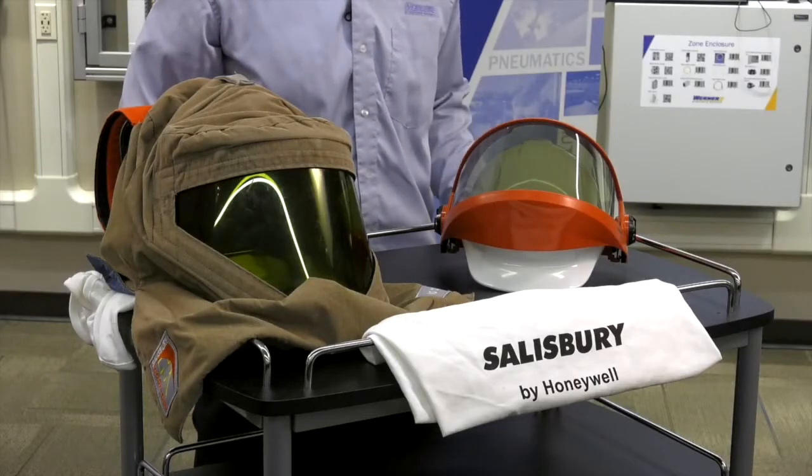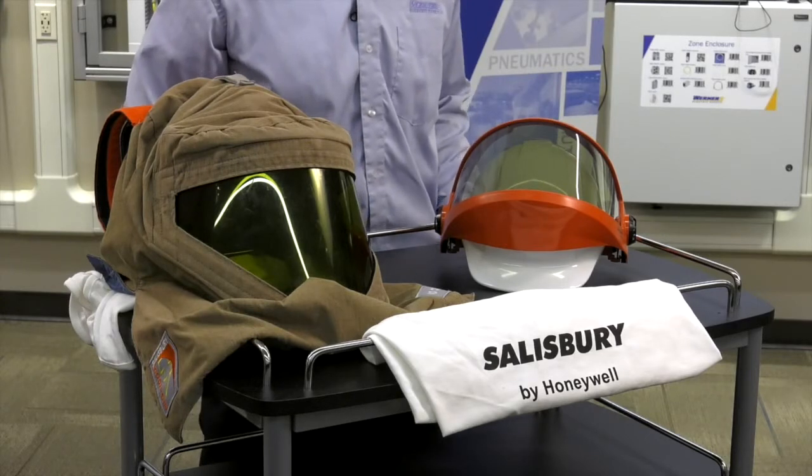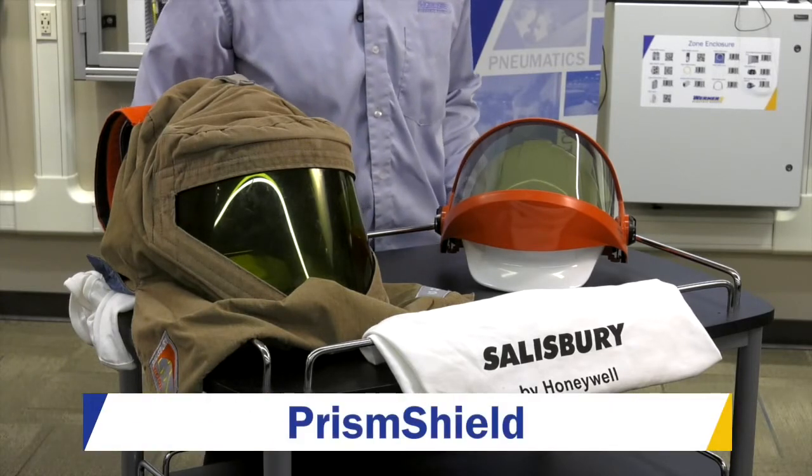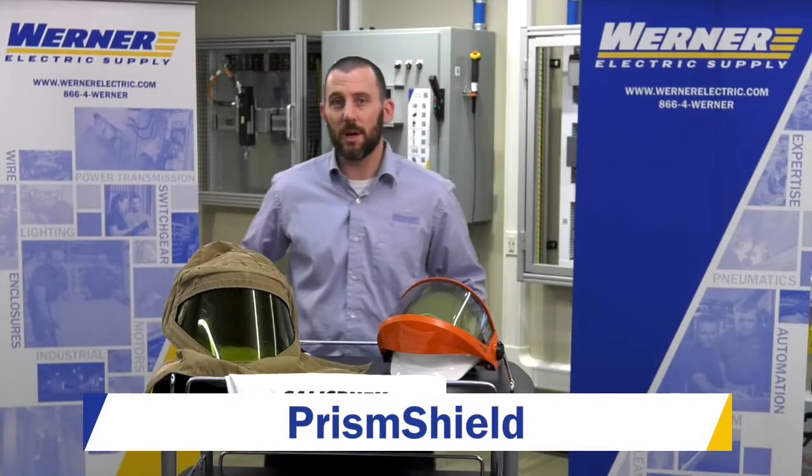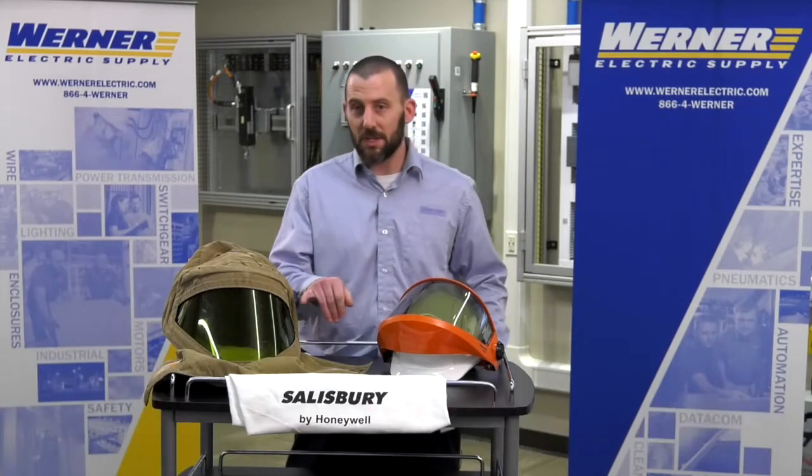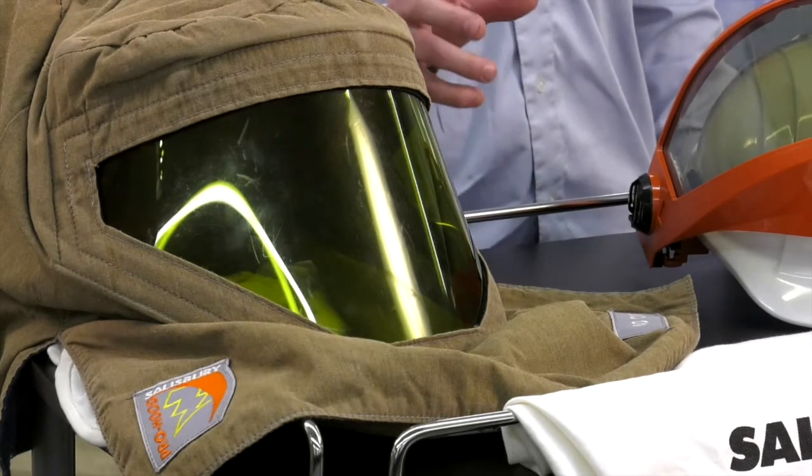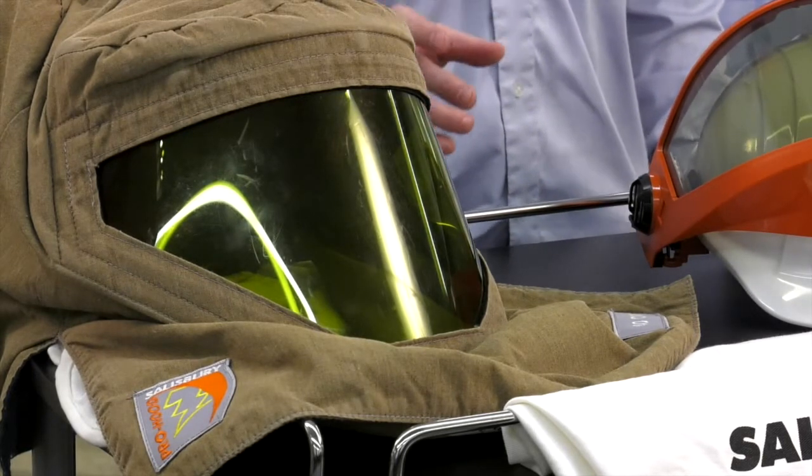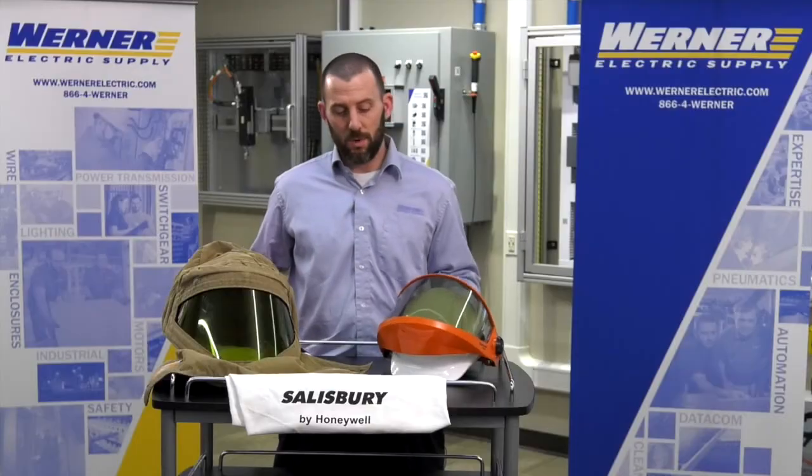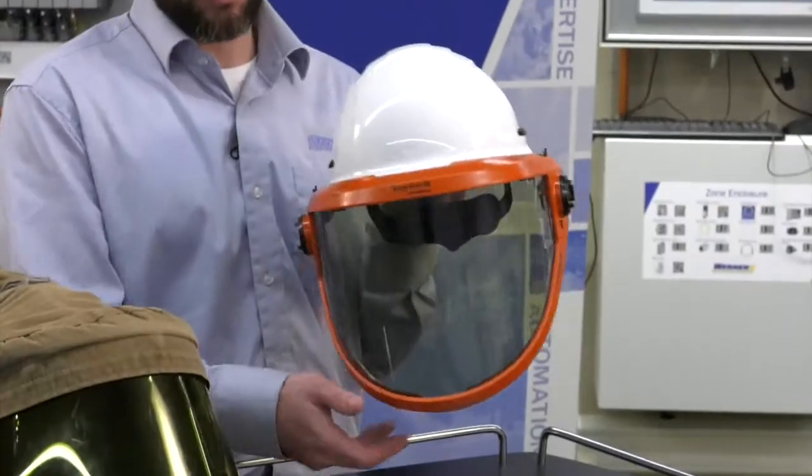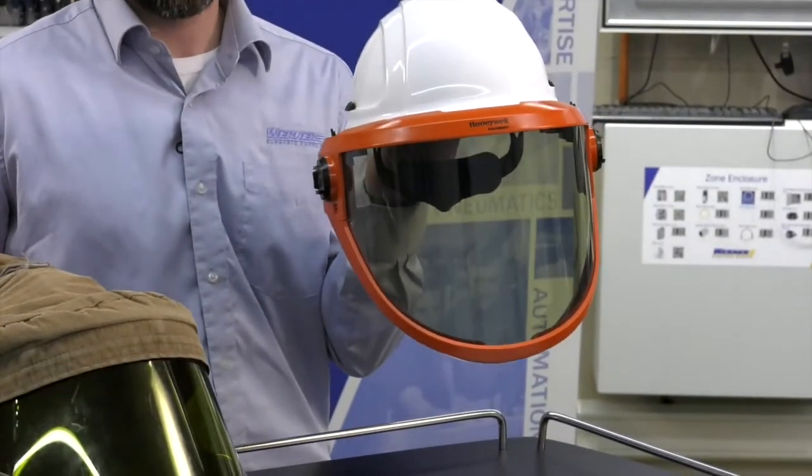I'm here to talk about a new product from Salisbury called the Prism Shield. Really, seeing is believing with this product. Traditional greenish tint lenses convoluted the color of wires and you couldn't tell what you were using. With this bronze tint face shield, you can see all the different wire colors you're working with.